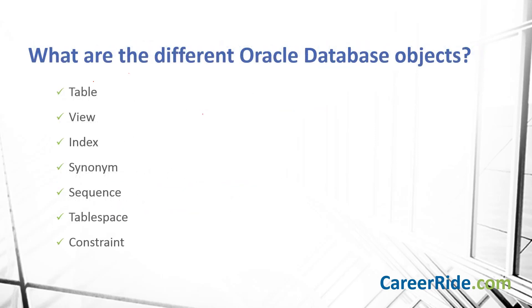What are the different Oracle database objects? Oracle database objects include: table, view, index, synonym, sequence, table space, and constraint.